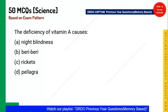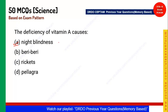Next question: Deficiency of vitamin A causes what? The answer is option A. To remove that deficiency, doctors always prescribe carrots. Note that beriberi is associated with vitamin B, rickets with vitamin D, and pellagra is another disease.